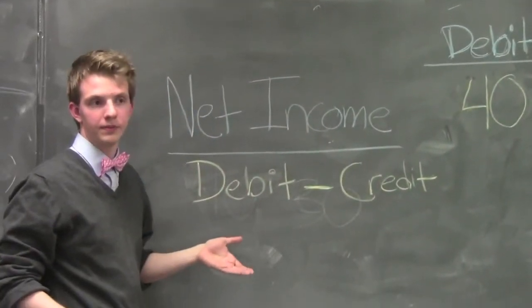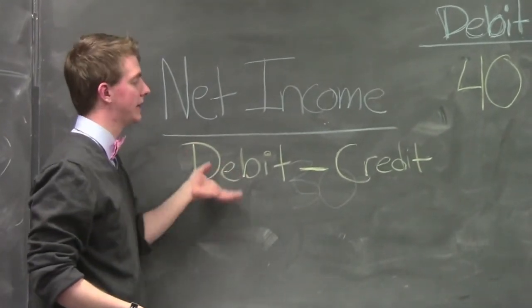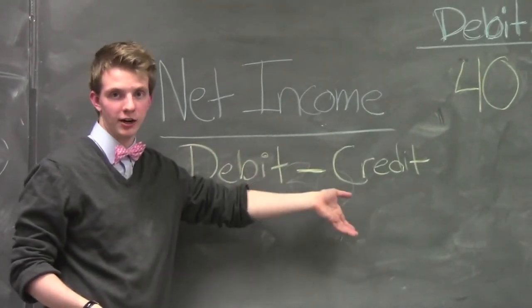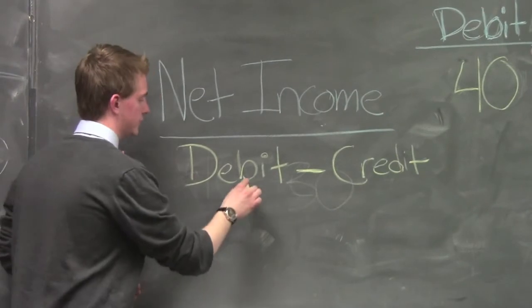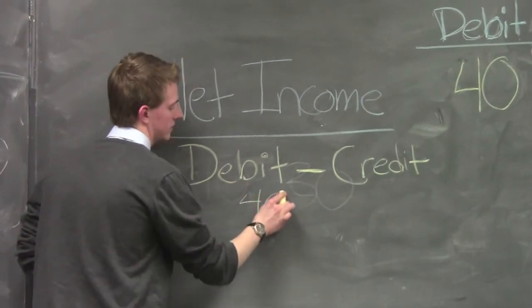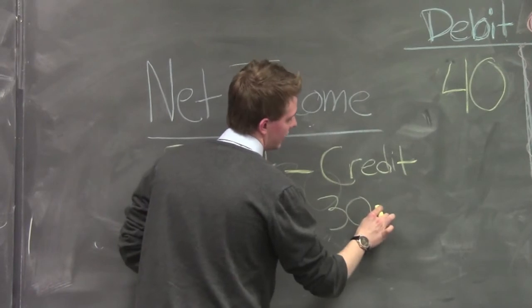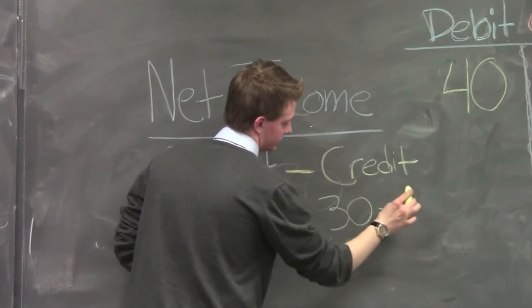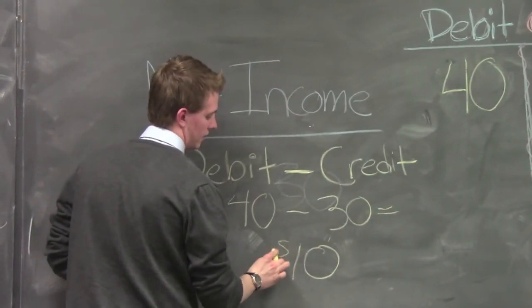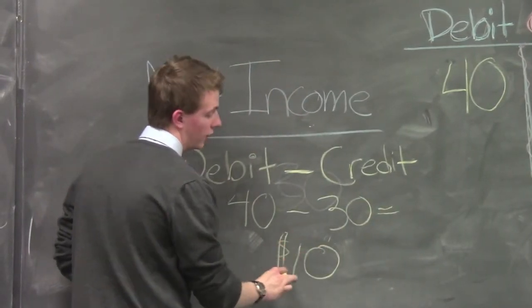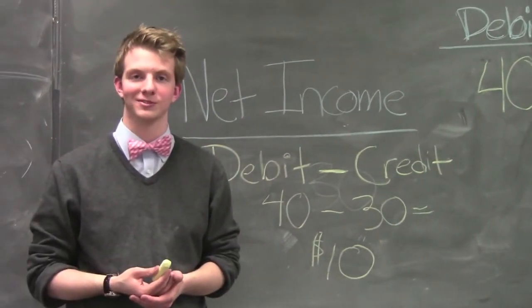Net income is simply your debits minus your credits. So let's do this: forty minus thirty equals ten dollars. Our net income is ten dollars.